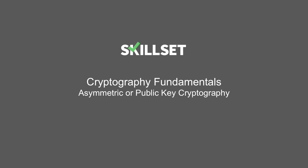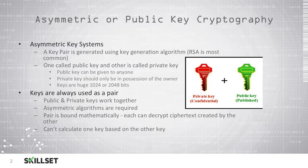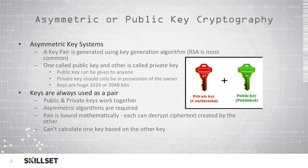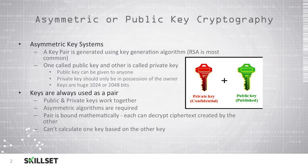Welcome to our cryptographic fundamentals asymmetric or public key cryptography module. Asymmetric cryptography is also known as public key cryptography. It uses two keys, whereas symmetric cryptography only used one key. With asymmetric cryptography we use a key pair — one is called the public key and one is called the private key. The public key can be publicly shared and given to anyone, while the private key needs to be kept confidential and only the owner should have access to it for the system to function properly.